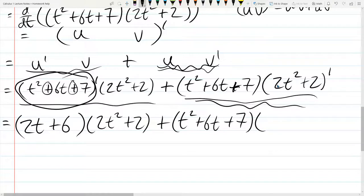Copying down the t squared plus 6t plus 7. Now derivative of the second term, t squared derivative is 2t. So it's 2 times 2t, which of course is 4t. Plus 2 derivative, and derivative of 2 is 0.